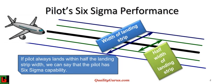Before we go any further into this course, let us understand what is Six Sigma. To explain Six Sigma in very general terms, let us take an example of a pilot landing on a landing strip. If the pilot is able to land on half of the landing width most of the times, then we can say that the pilot has Six Sigma landing capability.